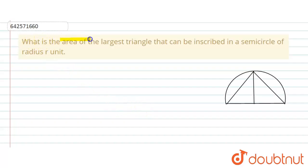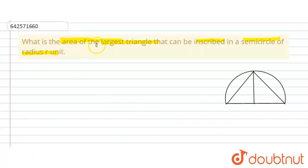Hello everyone. The question says: what is the area of the largest triangle that can be inscribed in a semicircle of radius r units? We need to find the area of the largest triangle, so for better understanding, we will draw a figure.